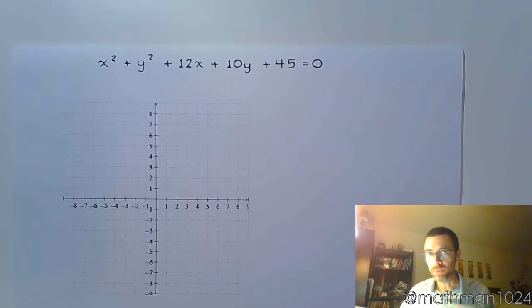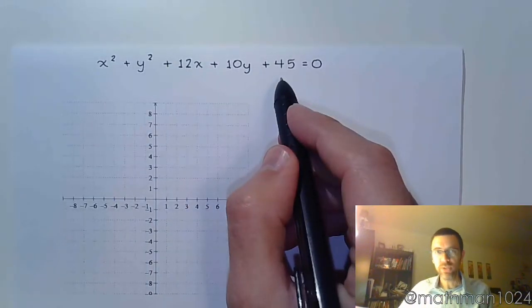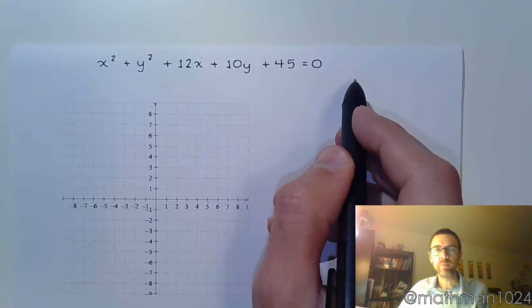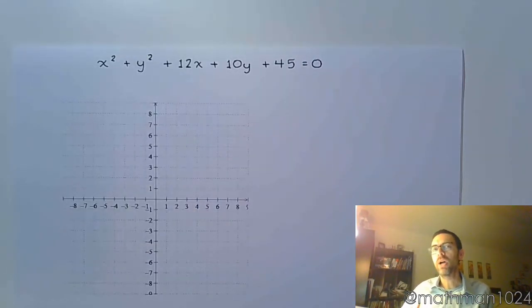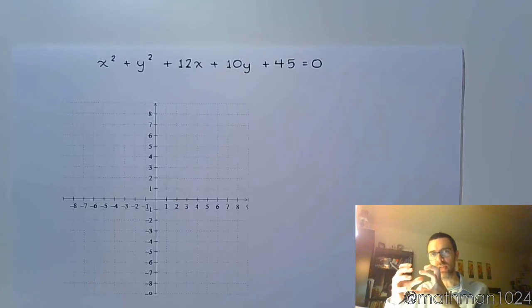But before we complete the square, we need to rearrange some terms first. So the 45, just like we were completing the square, is going to go to the other side. And then I'm going to rearrange my terms so that I have my x's together and then I have my y's together.